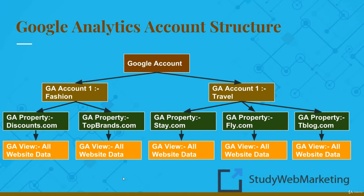Under accounts you have properties. Under the fashion account, the properties are discounts.com and topbrands.com — discounts.com dealing with discounted goods while topbrands.com representing exclusive and branded fashion products. Similarly, under the travel account we have three properties: fly.com representing flight ticketing business, stay.com representing hotel booking business, and travelblog.com which feeds into the flight and hotel websites as a traffic feeder.